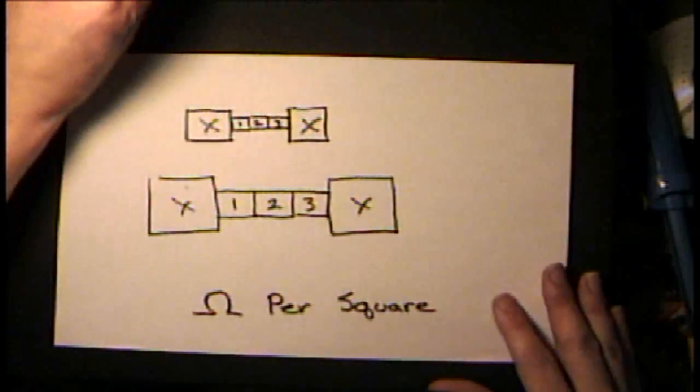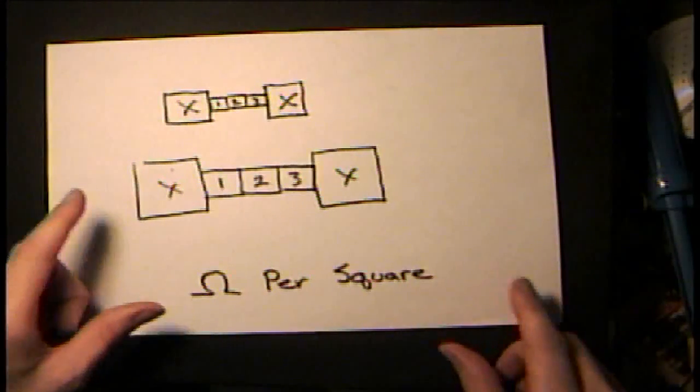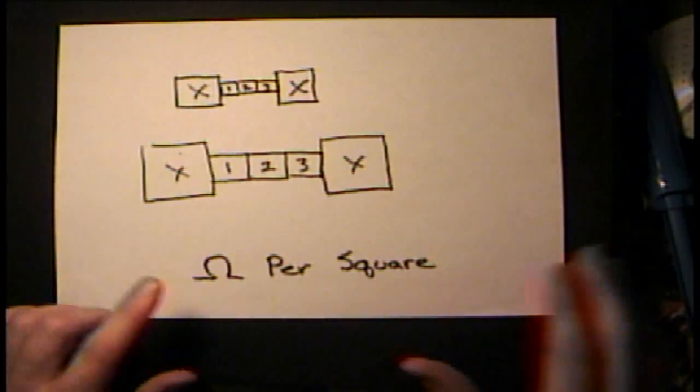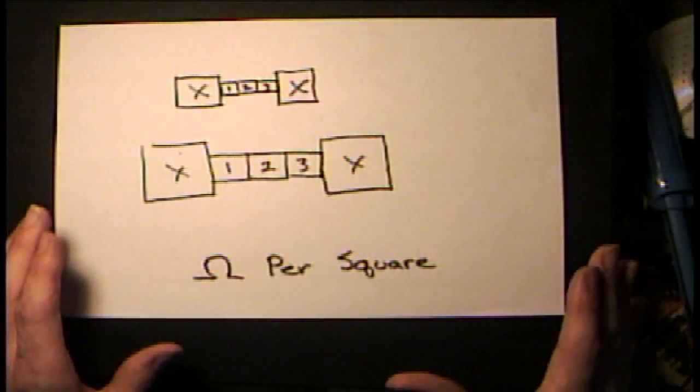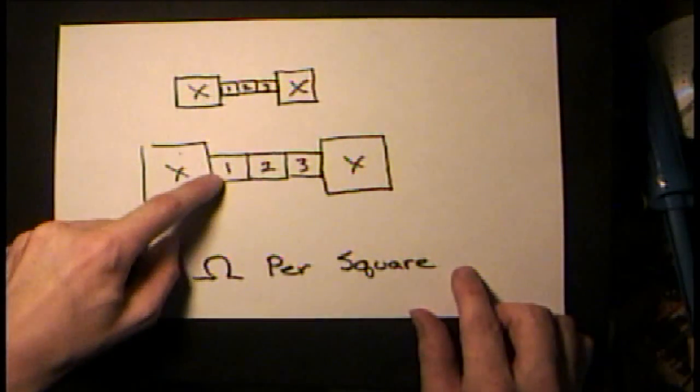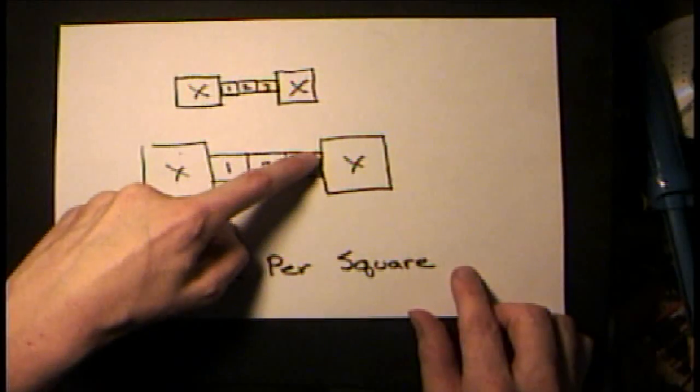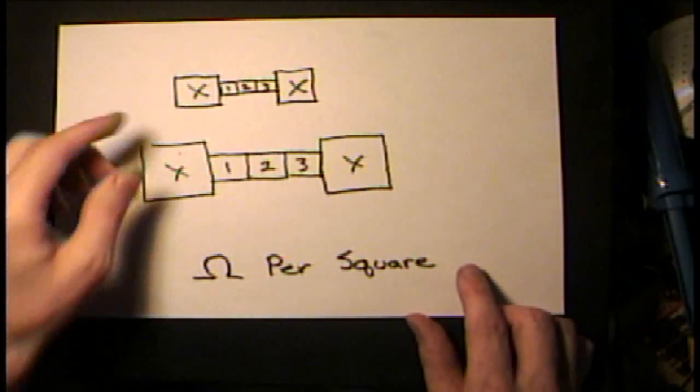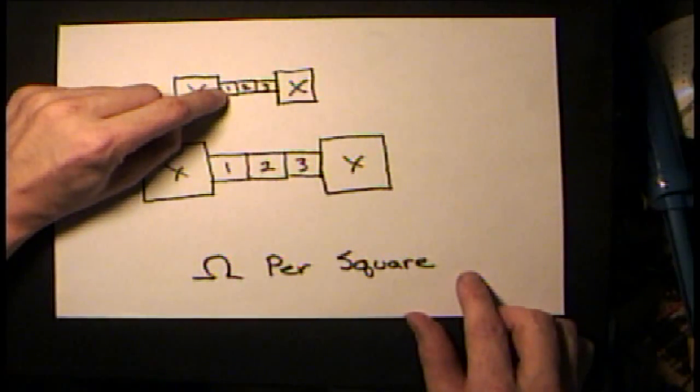An interesting fact about wafers is that they have ohms per square. When you start building features on your wafer, if you build features that are square-shaped, they'll always have the same ohms of resistance no matter the feature size.